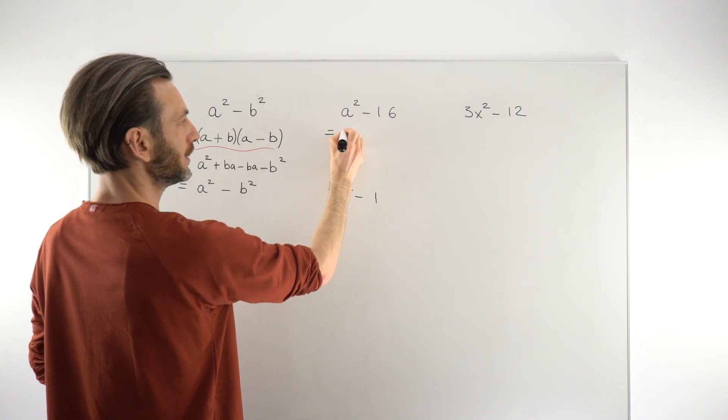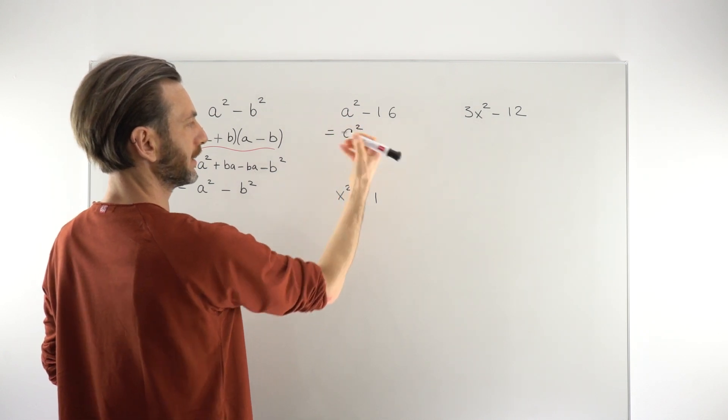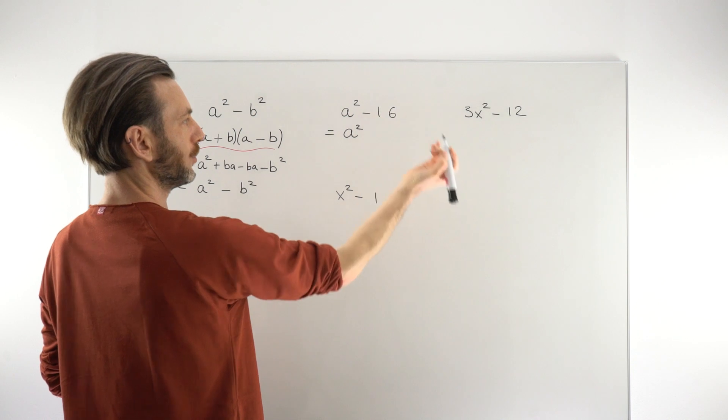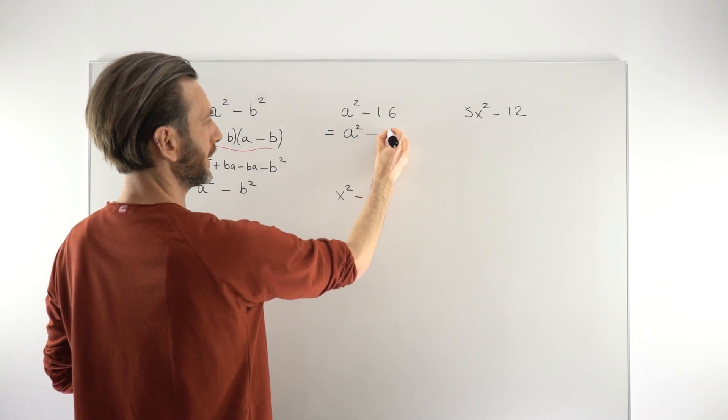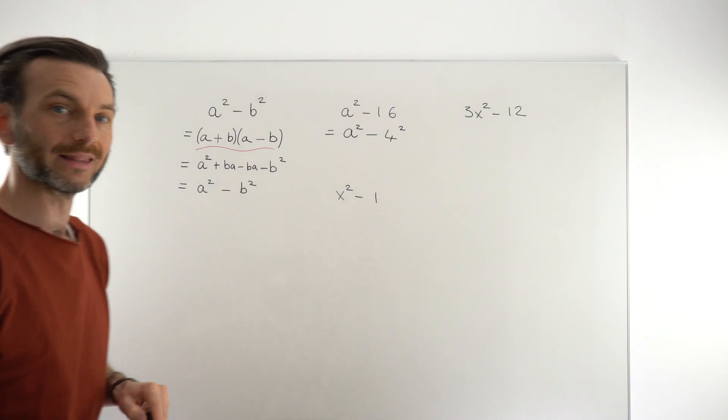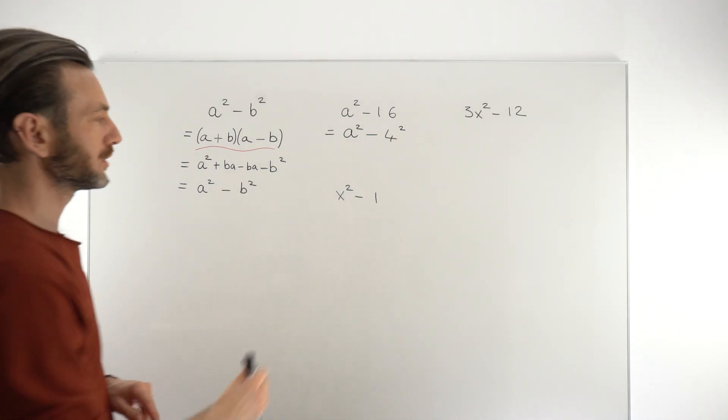This guy here, yeah the a², that's fine, that's something squared. This is not something squared but 16 is 4². So we can just manipulate that into a difference of squares.